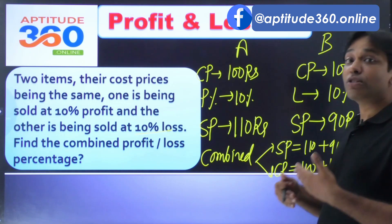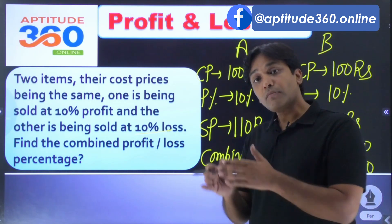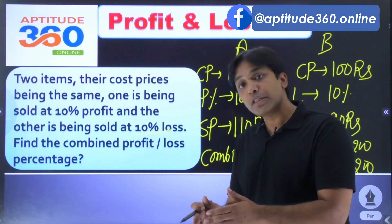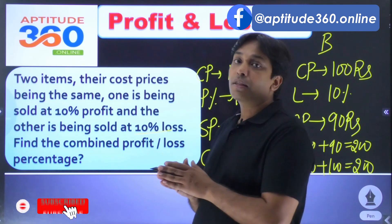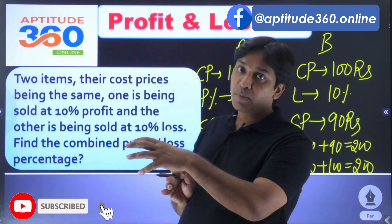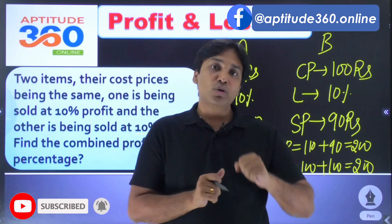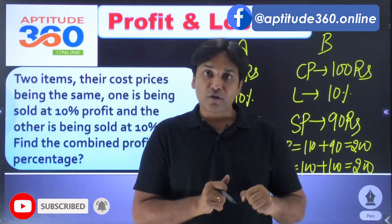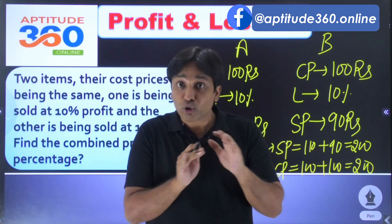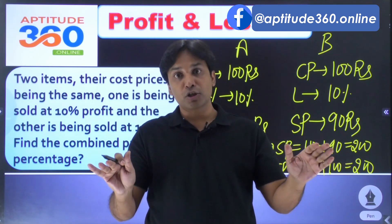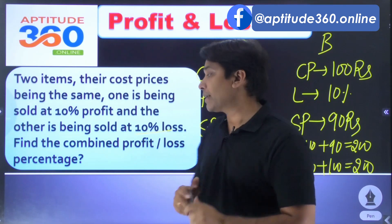The combined cost price is 100 plus 100, again 200 rupees. So in this situation, two items have the same cost price, one is sold at 10% profit and the other at 10% loss — there is no combined profit or loss percentage.